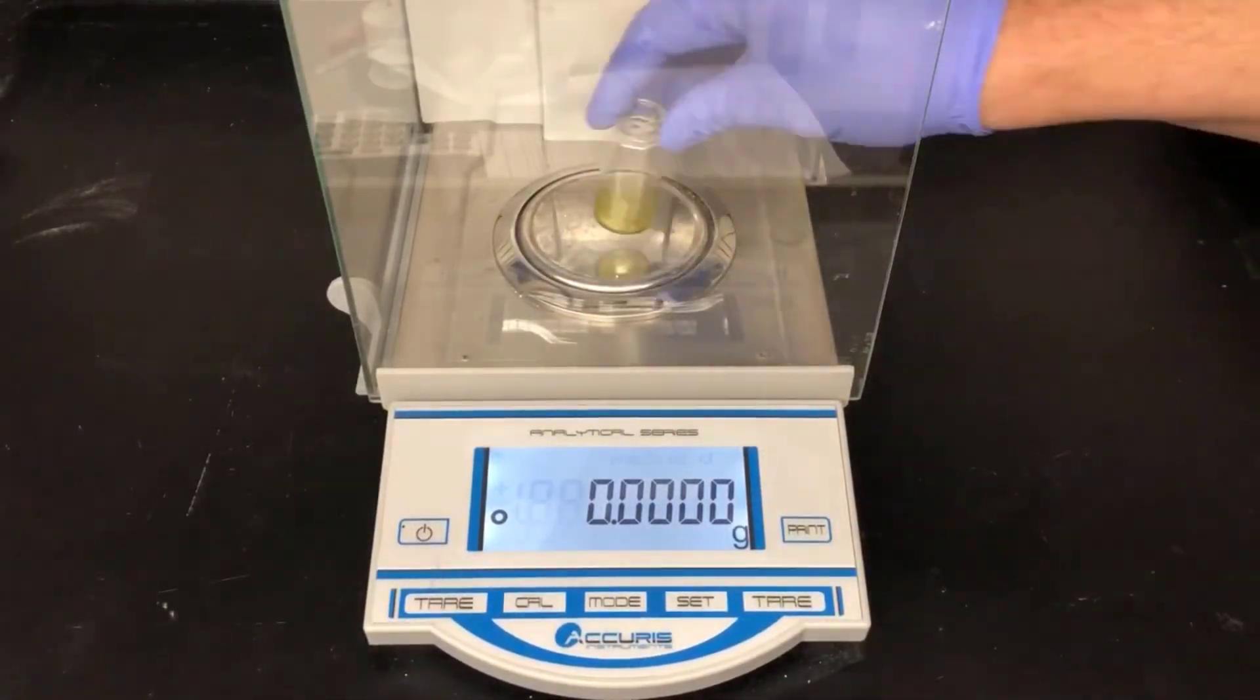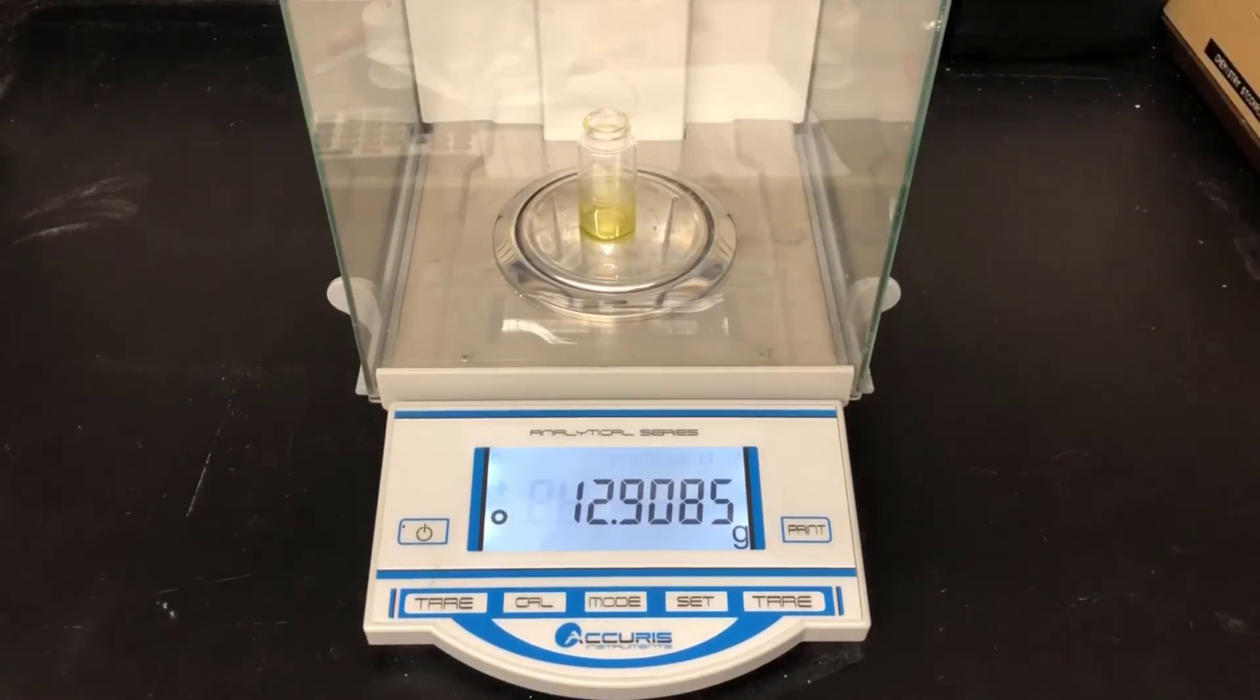Now I'll measure the mass of the vial and the citrus oil, and then subtract the mass of the empty vial that we determined earlier to get the mass of the citrus oil by difference.